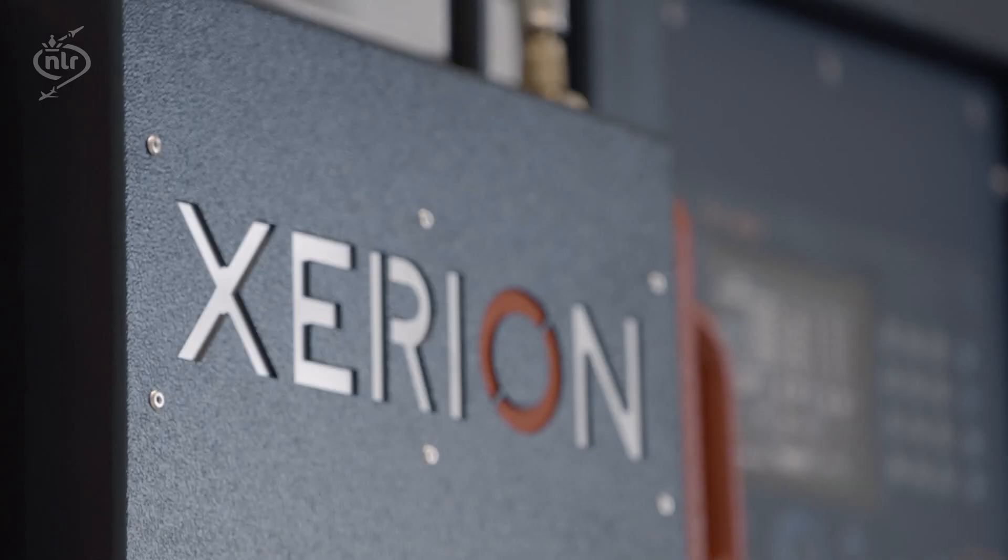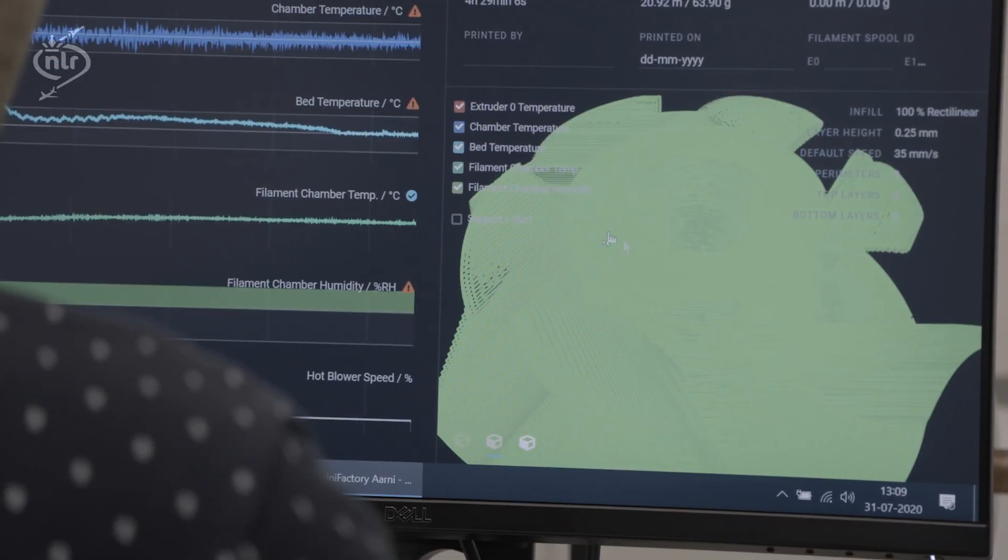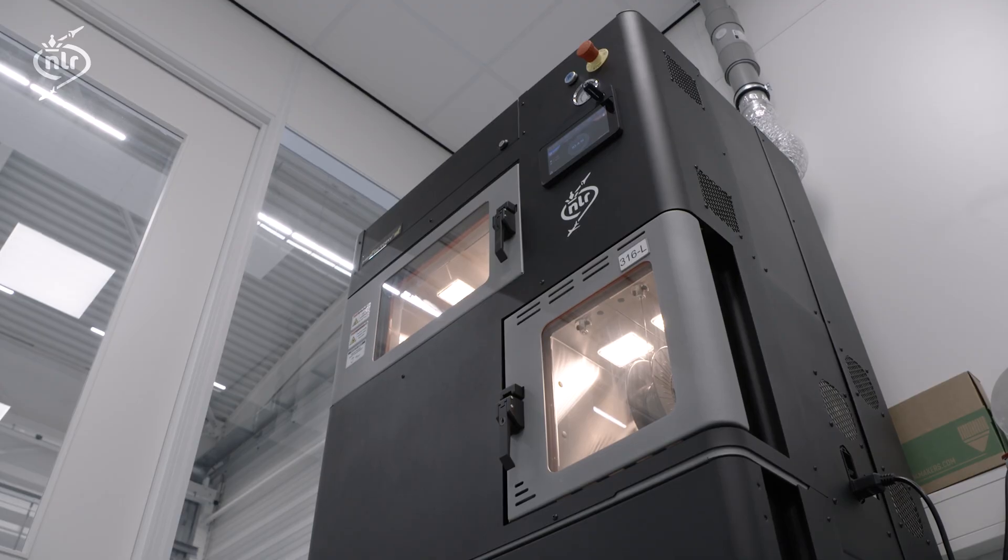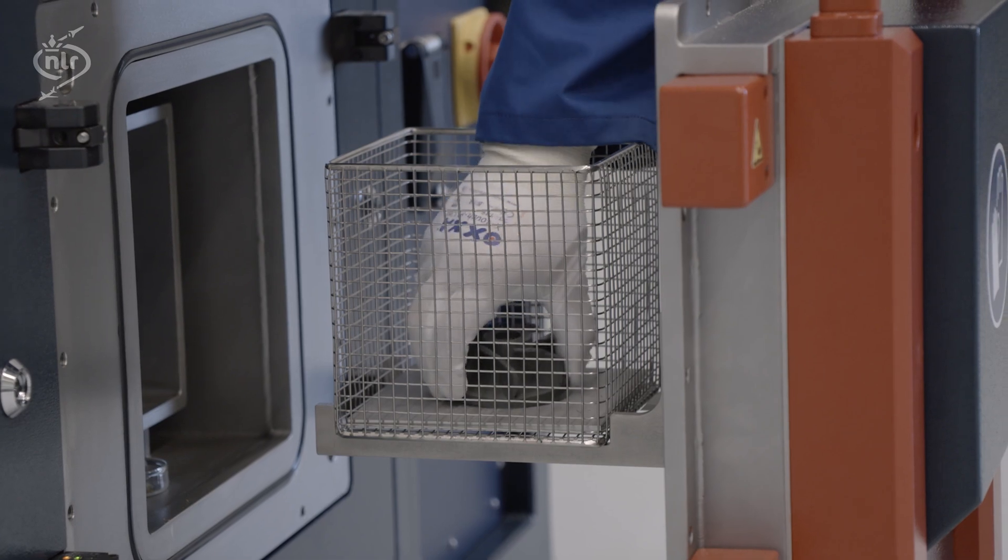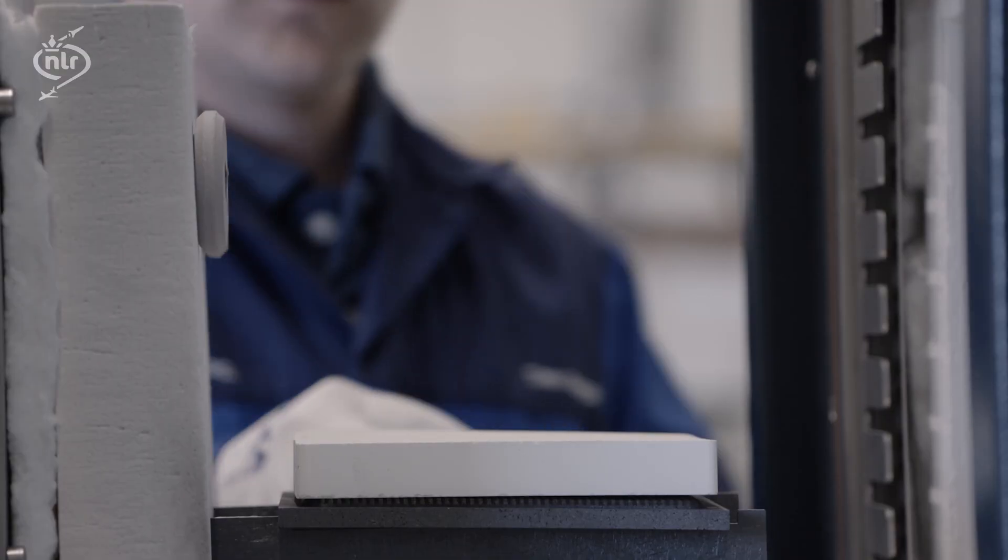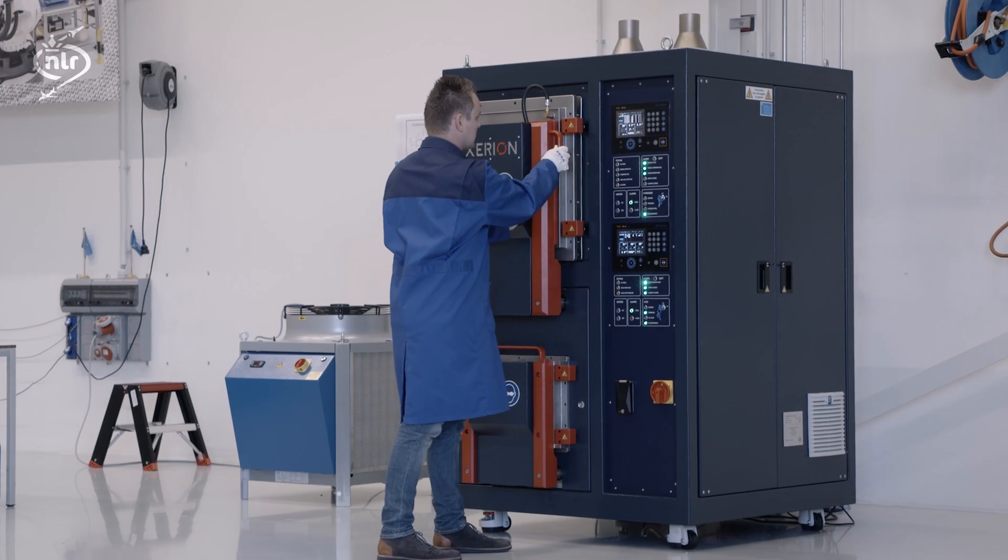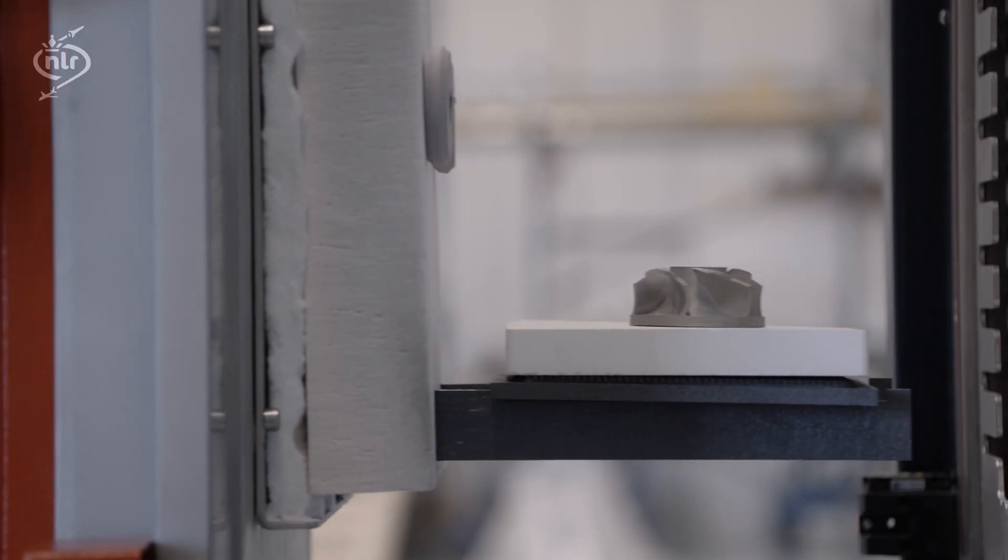Secondly, the sinter-based fused filament fabrication, which uses metal-filled polymer filaments for 3D printing. The printed parts are de-binded and sintered afterwards. This is a fast 24-hour process to produce parts up to 150mm cube.